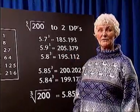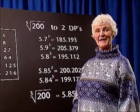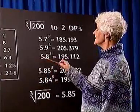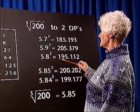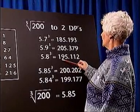This is above 200, but perhaps again we can improve on the estimate, so we will try 5.8 cubed. 5.8 cubed is equal to 195.112.